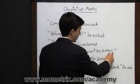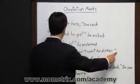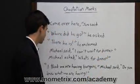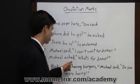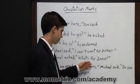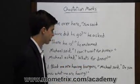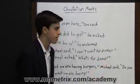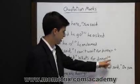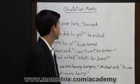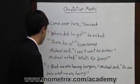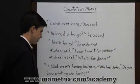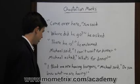Notice that the period is inside the quotation marks. This sentence says: Michael asked, 'What's for dinner?' In this case it's a question, so that's why we have a question mark at the end. Again, notice that it's inside the quotation marks.